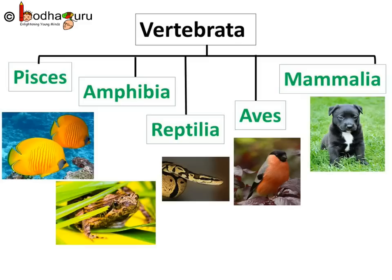Lastly, Mammalia — that is our class. These are warm-blooded animals with a four-chambered heart, they have external clearly visible ears, and the body is covered with hair. So that was all about the animal kingdom in brief.